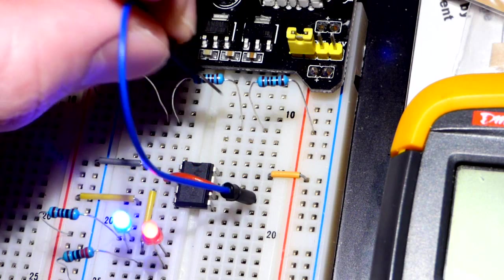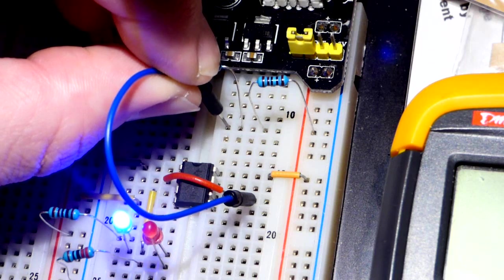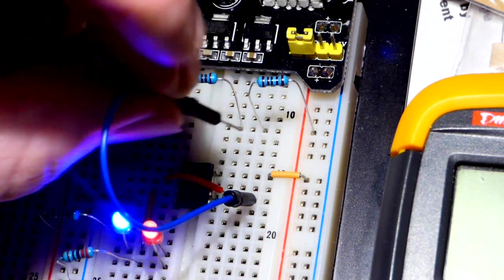And when I release this it's going to flutter, but now I'll put it to the two-thirds voltage and now you can see that the blue LED is on.